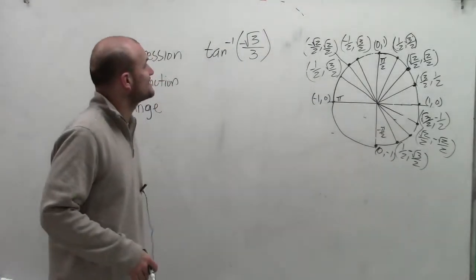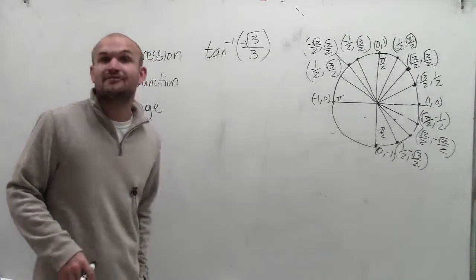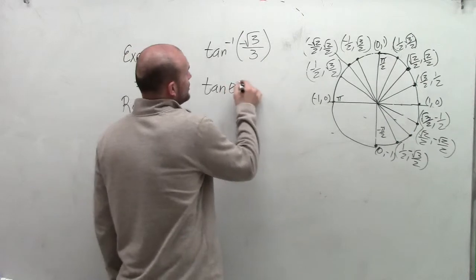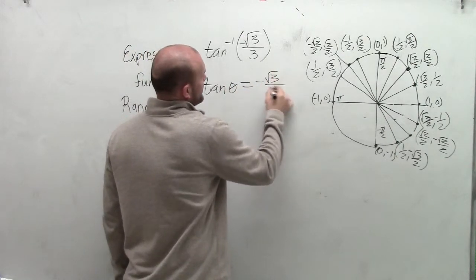OK, welcome. So what I have is the inverse tangent of negative square root of 3 divided by 3. And what exactly that's saying is the tangent of some angle is equal to the negative square root of 3 divided by 3.